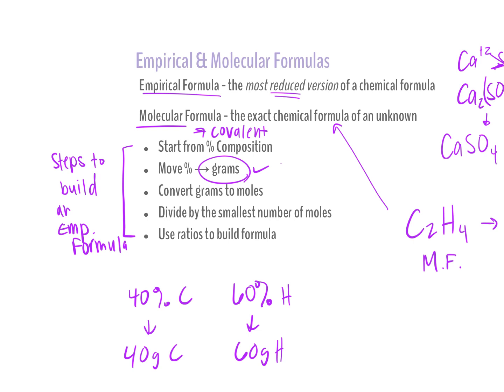Once we have everything in grams, we convert them to moles so we can compare them. We can't compare molecules gram to gram — we have to compare mole to mole. So we convert all elements from grams to moles, then divide each by the smallest number of moles, which gives us the ratio in which they fit together. Then we build our formula.